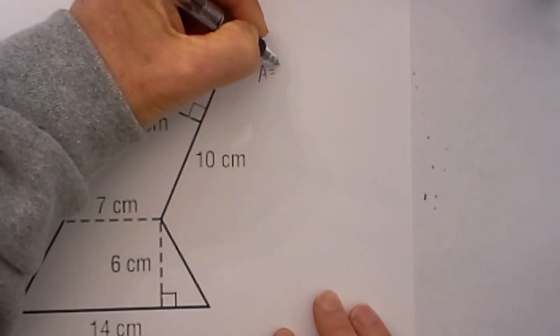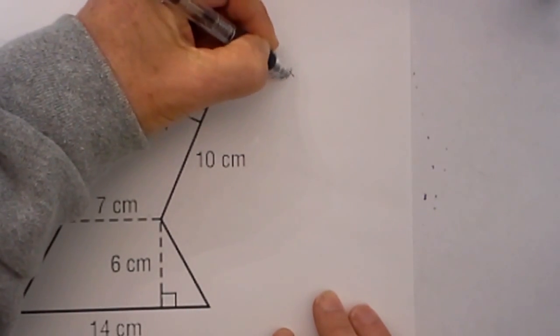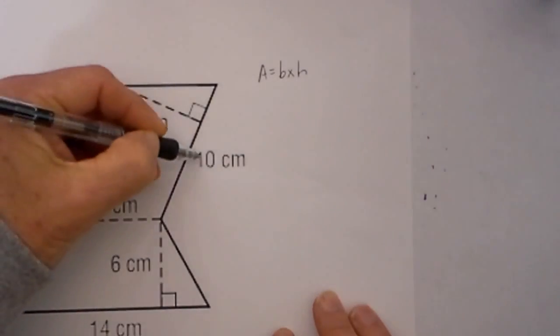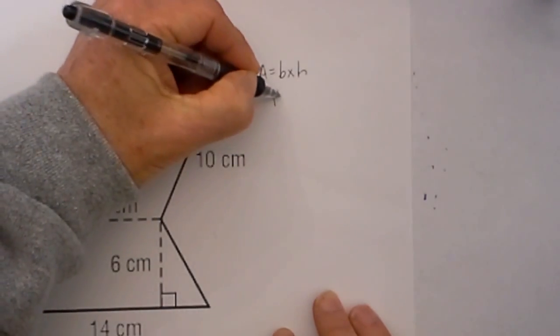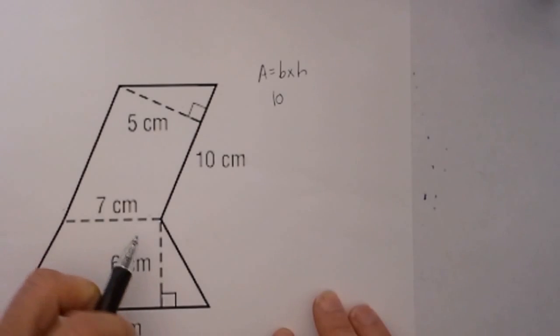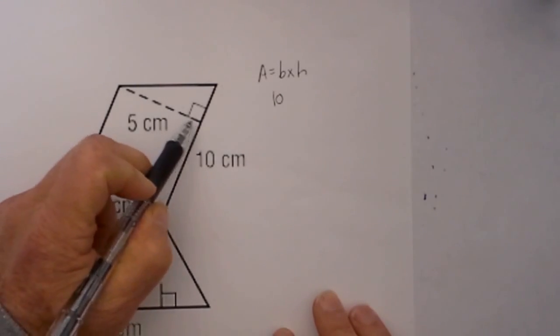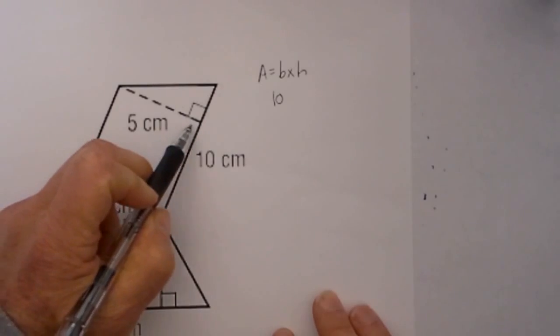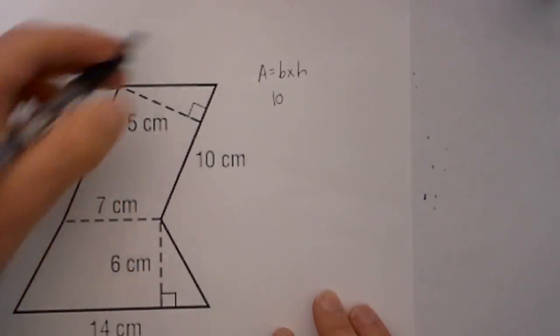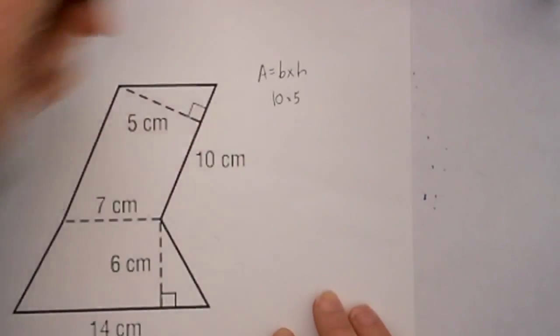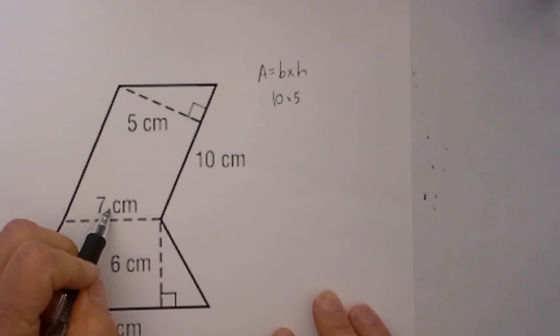The area of a parallelogram is base times height. The base is given—it is 10 cm—and the height is not the slant height, but it is a line that runs perpendicular to the base, which is 5 cm. That is a common mistake, so don't use the slant height. Use the line that is perpendicular, so that will equal 50 cm.